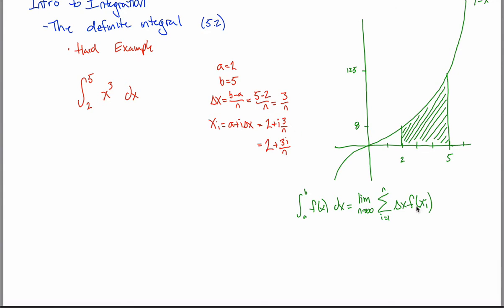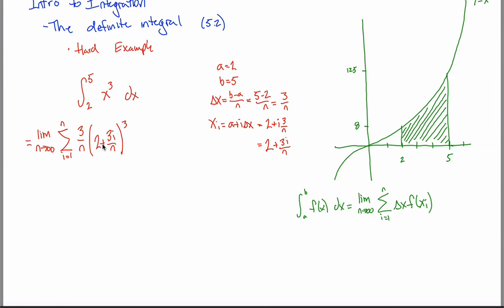Now that I have those, I can plug them into this formula. To figure out the area underneath the curve, I need to add up a whole bunch of rectangles — eventually infinitely many, but for now think of it as n rectangles. Here's the width of the rectangle, and here's the height of the rectangle. This is referring to the right endpoint, the x coordinate corresponding to the right endpoint of that rectangle. The heights of our rectangles are based on their right endpoints. To get the height from the x value, you cube it. If I can evaluate this limit, I would have the area underneath the curve.